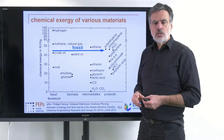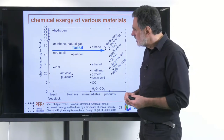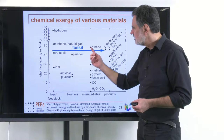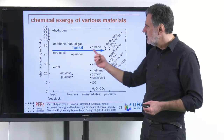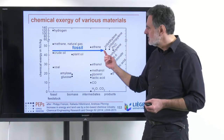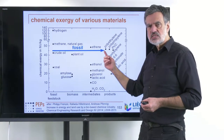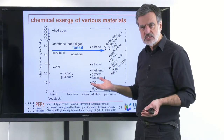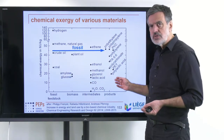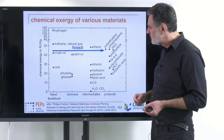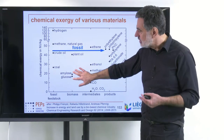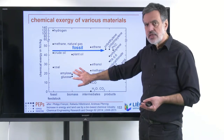What struck us was that if we go from crude oil to ethylene to polyethylene, the path is more or less horizontal. We asked ourselves: is there a reason for that, or is it accidental? Because different polymers have exergies at very different levels, and glucose/sugars, for example, have very low chemical exergy.